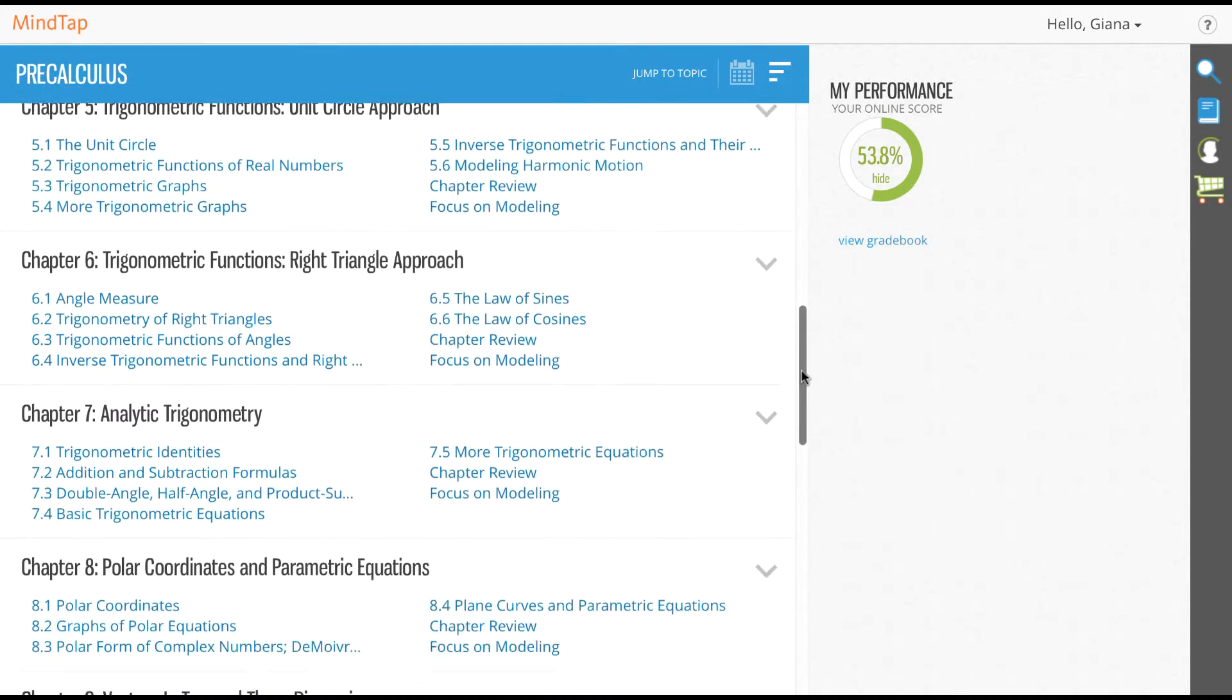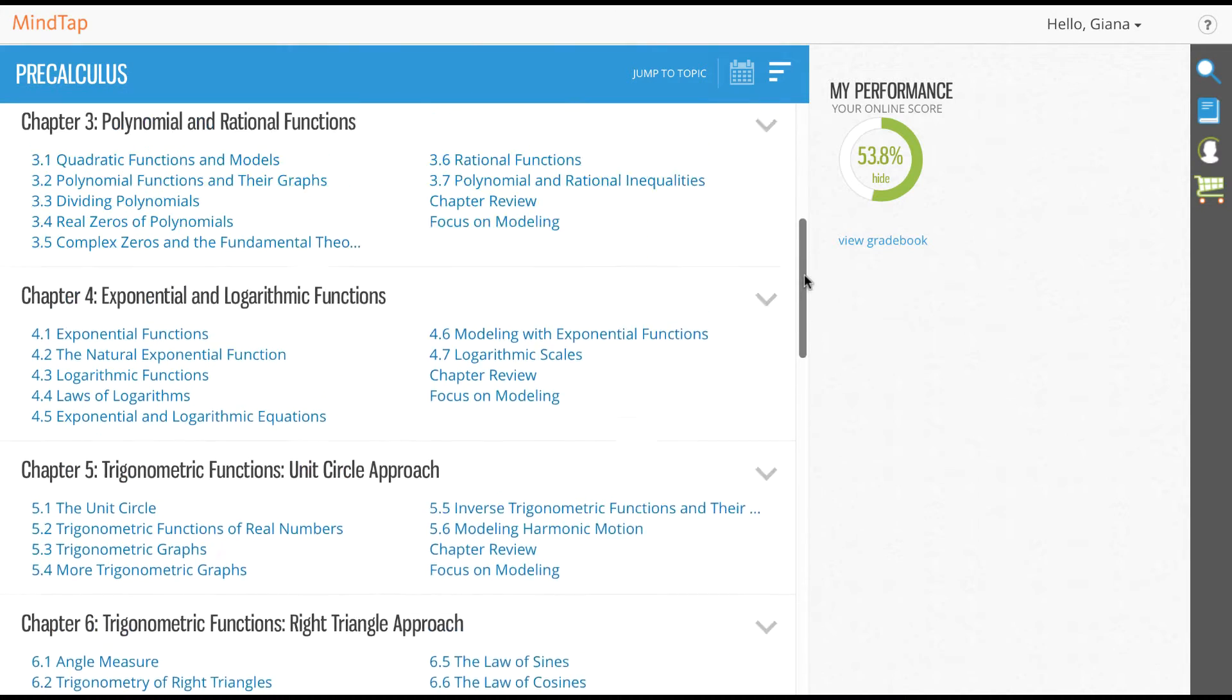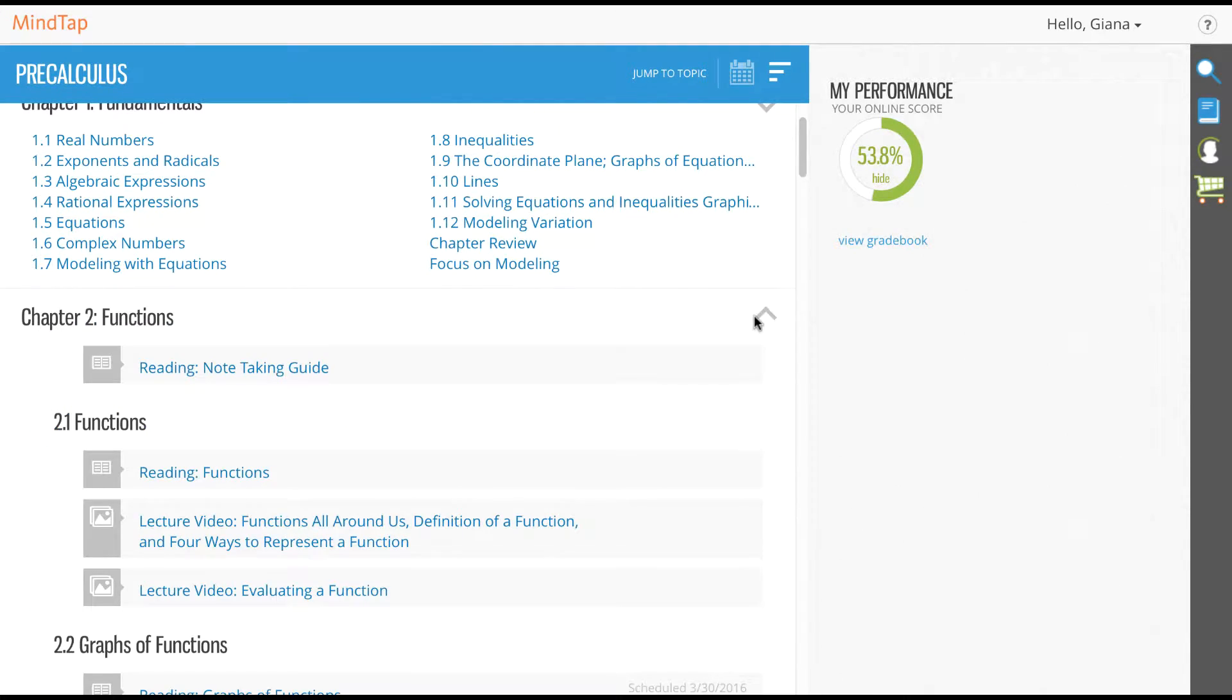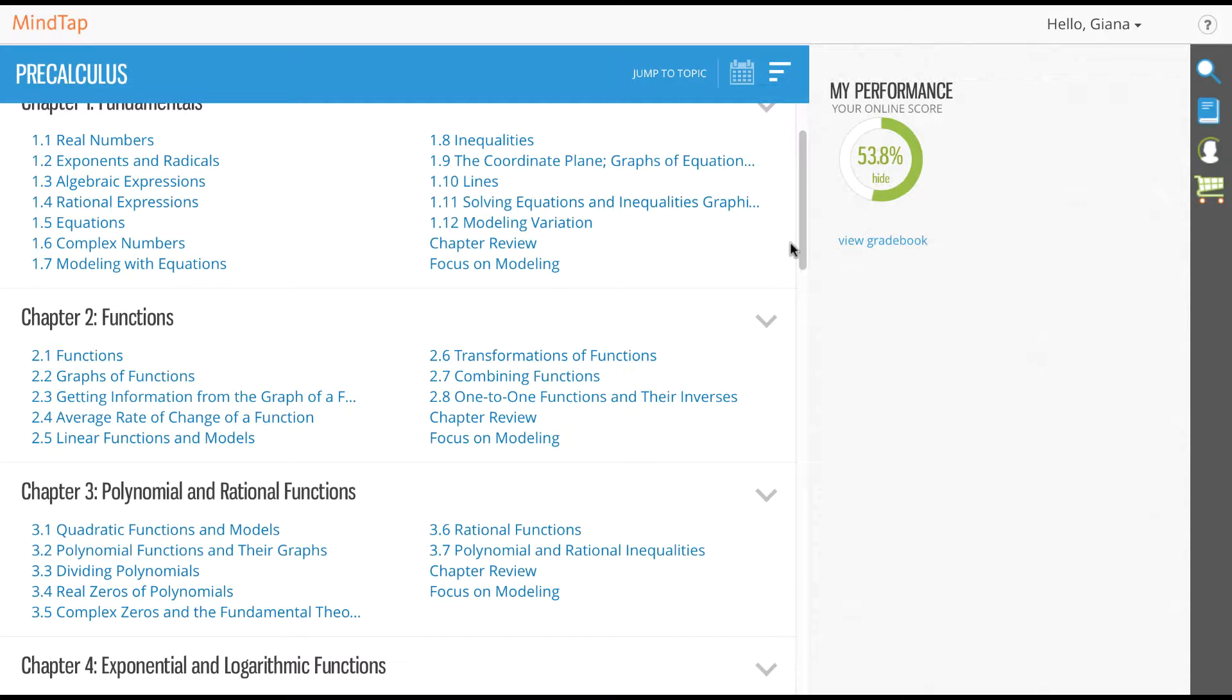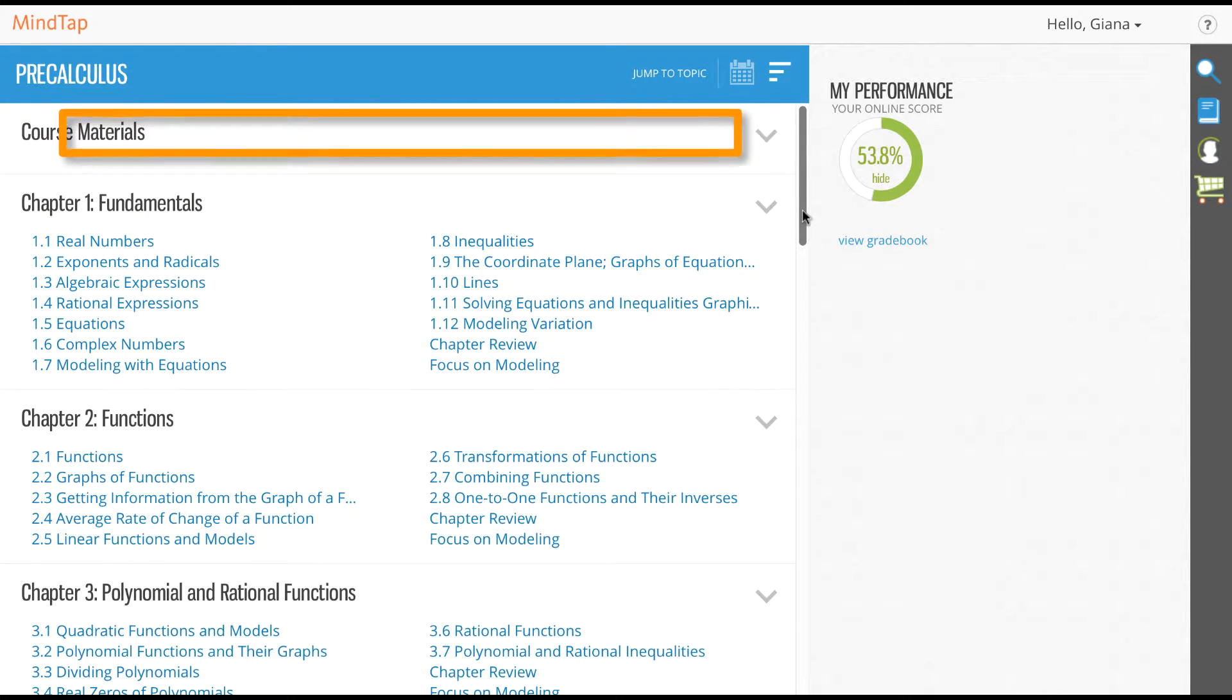If your instructor assigns an activity to a particular topic, you can find it under that section. If the activity is not associated with the topic, it will fall under Course Materials.